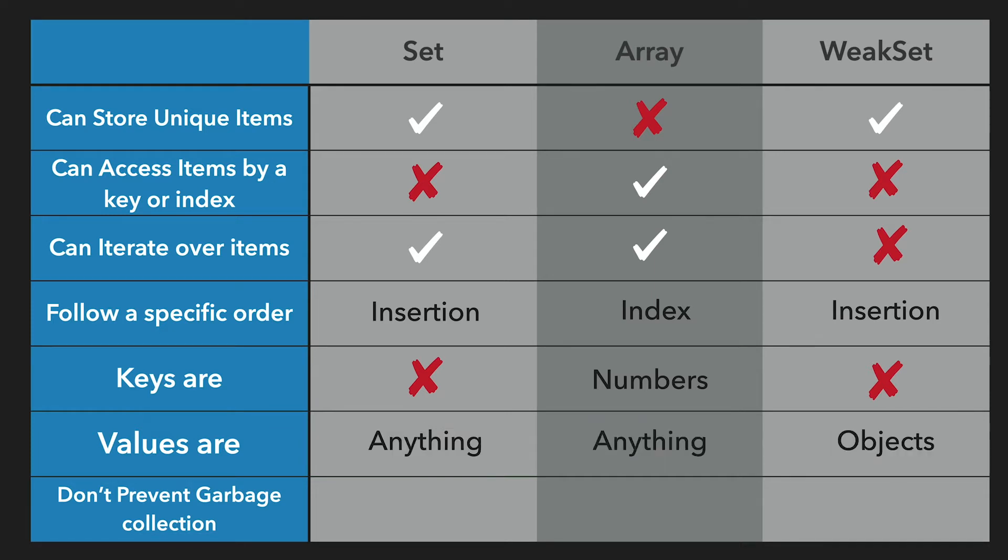Values can be anything in Sets and arrays, but WeakSets can only contain objects.